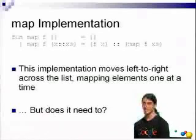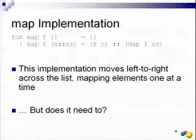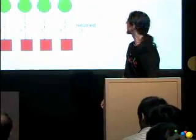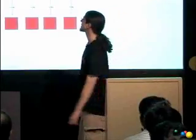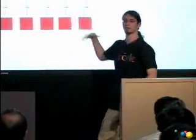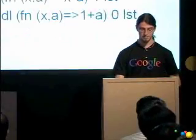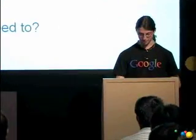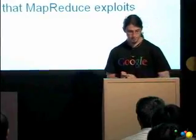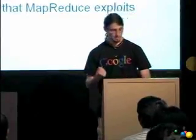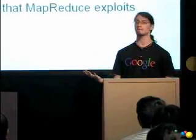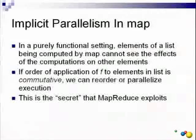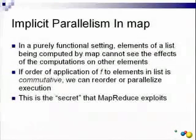Consequently, we can take map and parallelize it. Going back to this slide, we can actually parallelize this process by mapping several circles to squares all at one time, confident that the construction of f in a functional manner prevents them from interfering with one another. This is really the secret behind how MapReduce gets parallelism across a distributed setting — the functions that you write for the mapper have to be written in such a way that they don't communicate with one another, and are effectively side-effect-less with respect to the total computation.